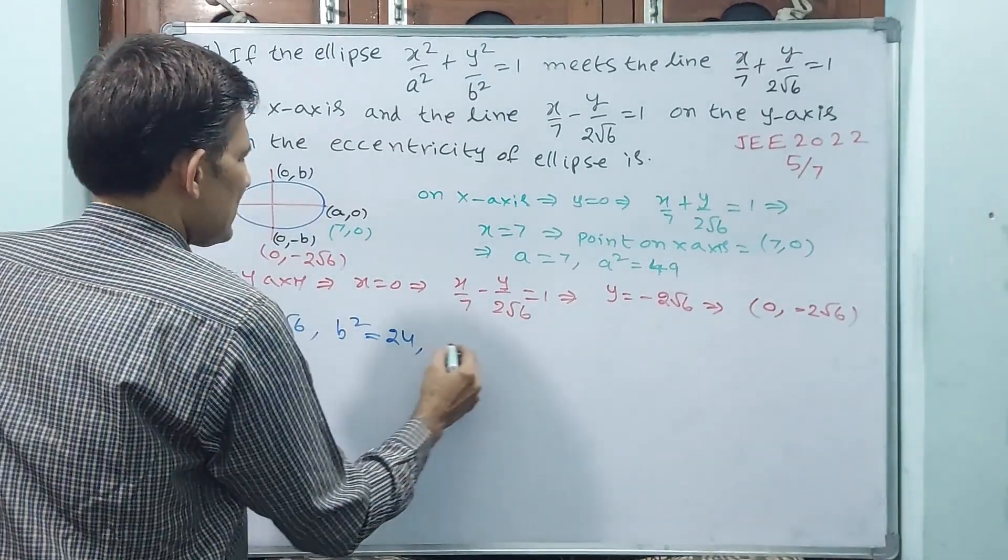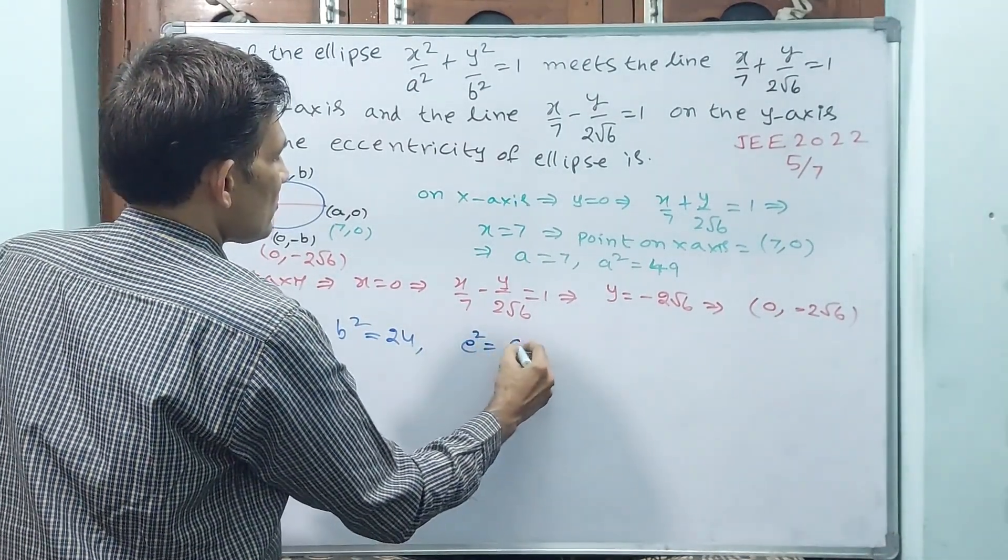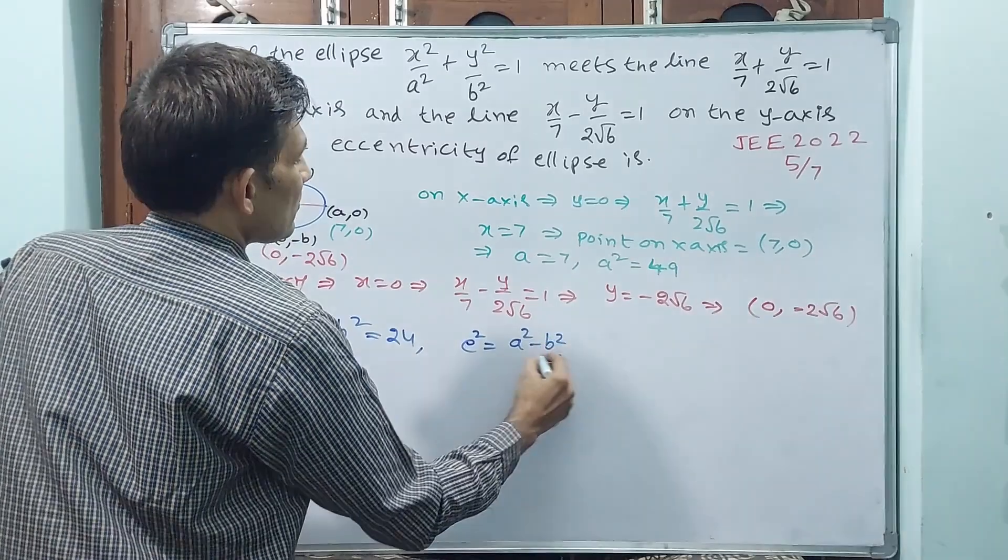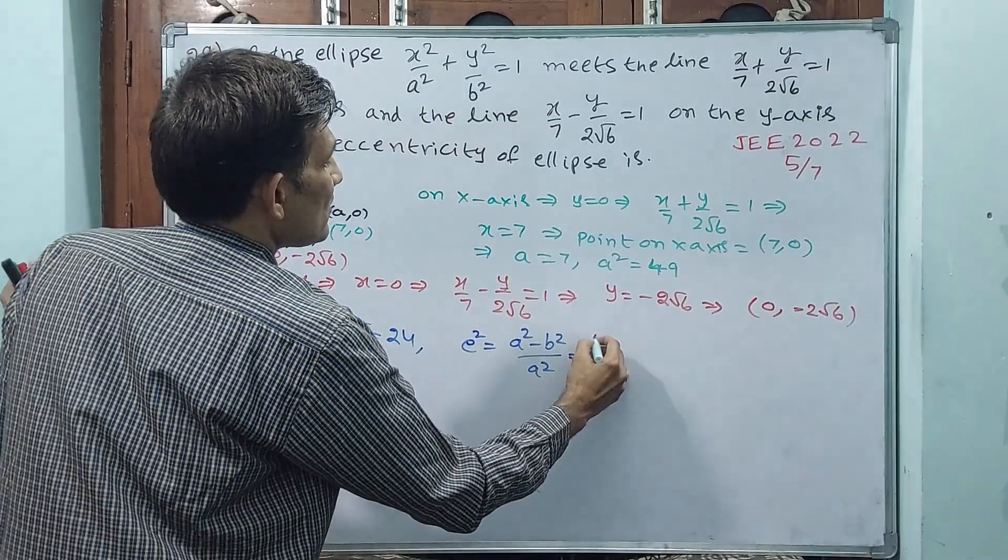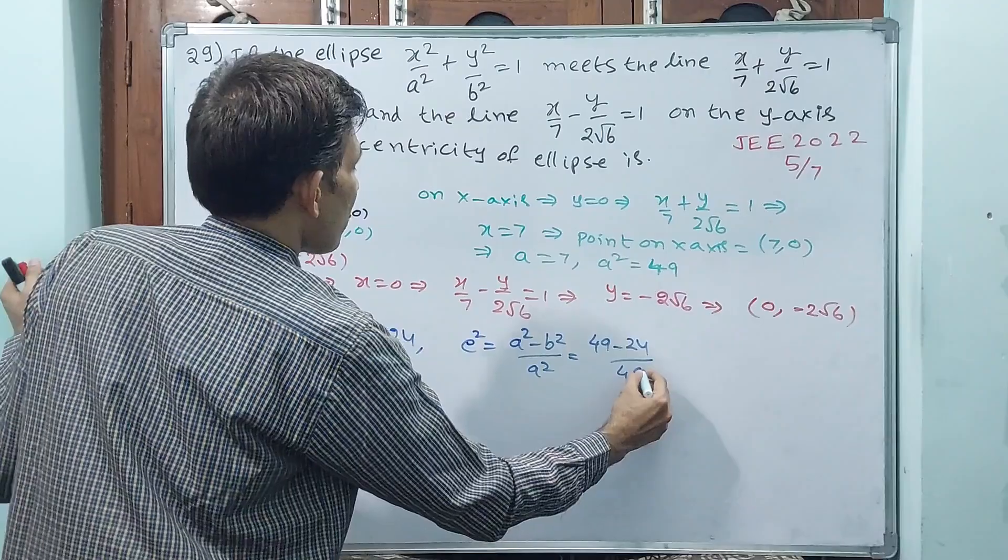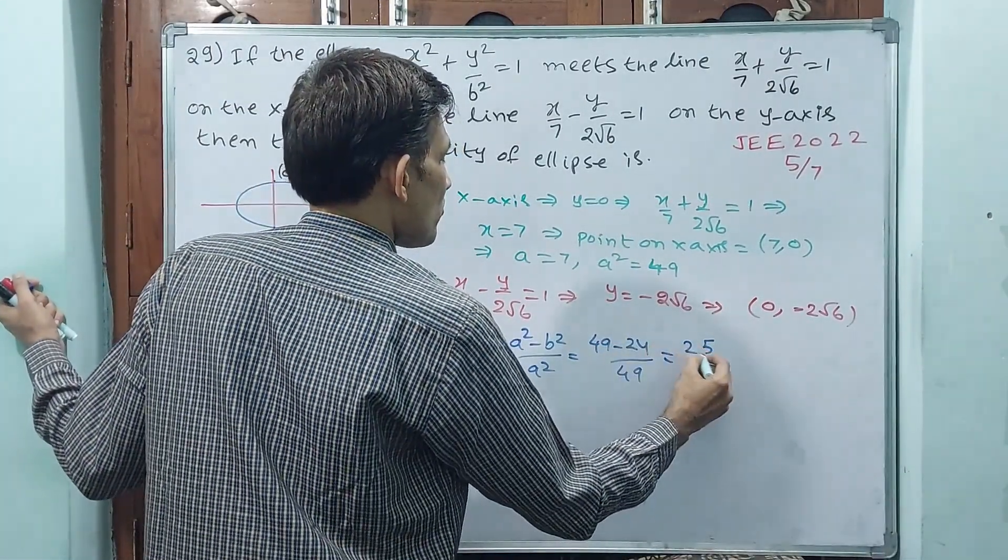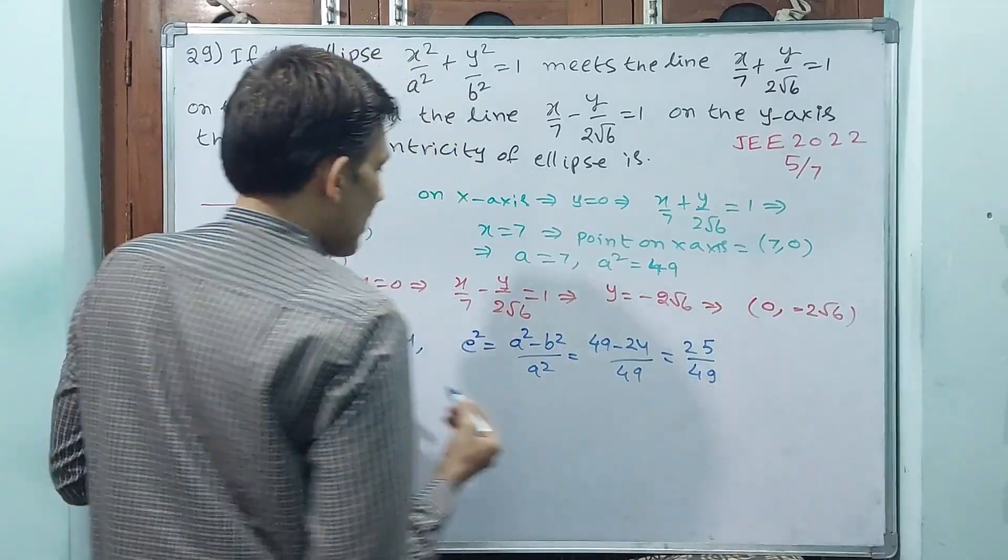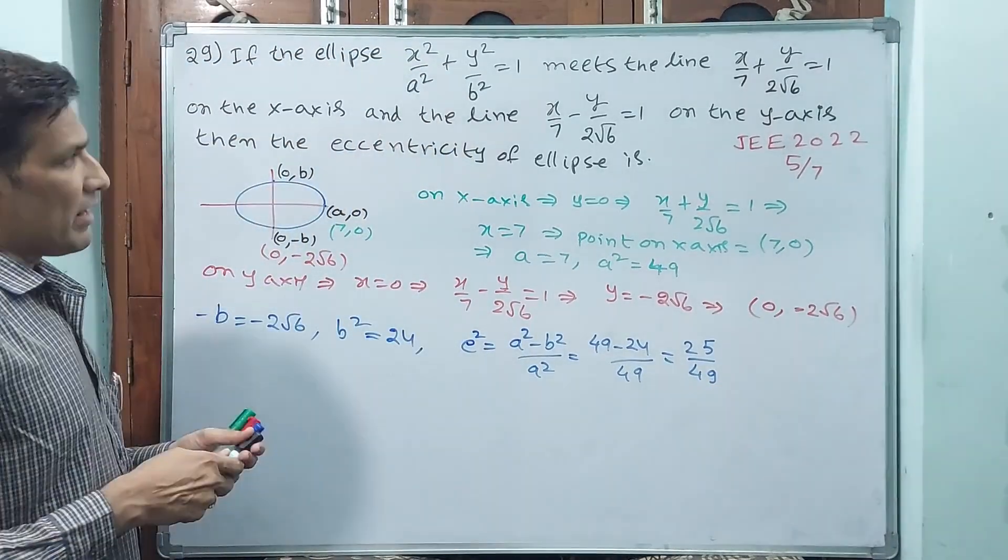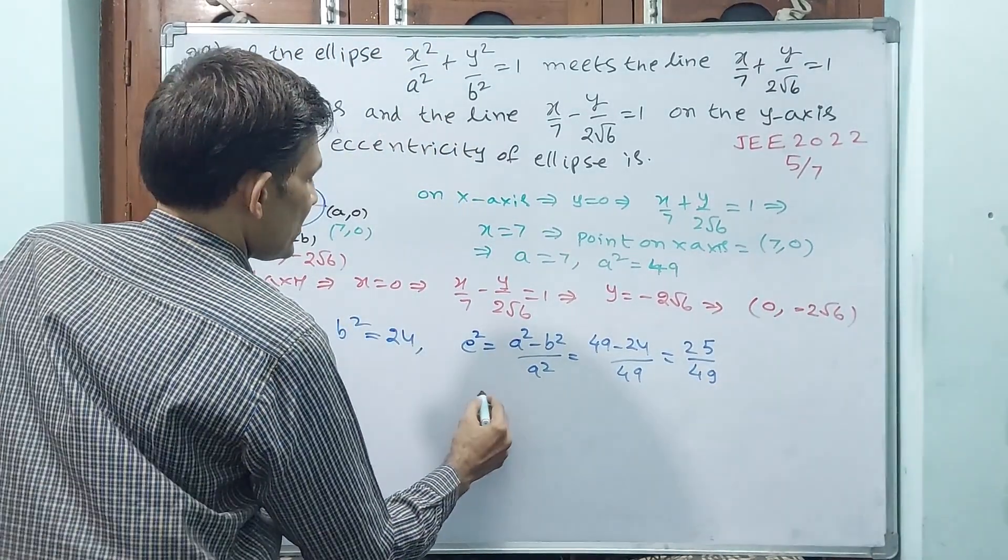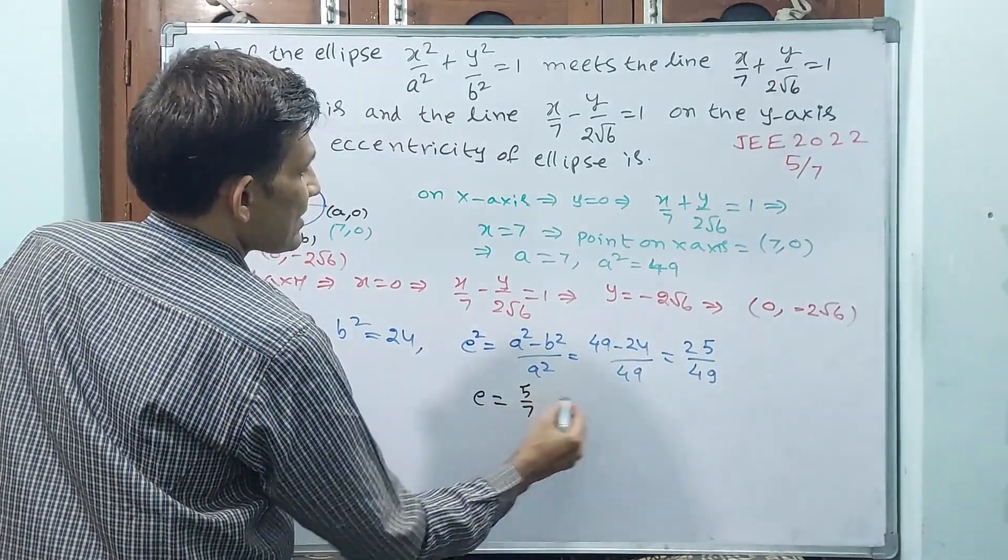Eccentricity they are asking. Very easy. e² = (a² - b²)/a² = (49 - 24)/49 = 25/49. This is e². What you require? Eccentricity e. e = 5/7.